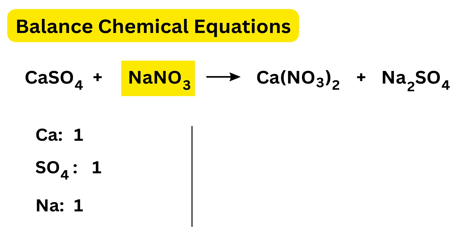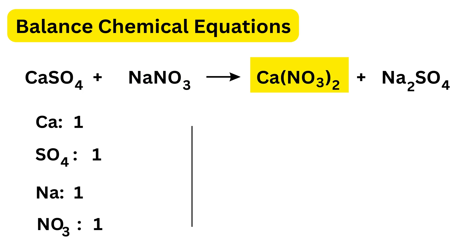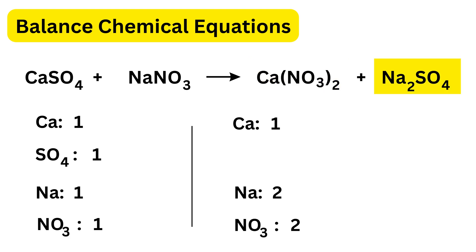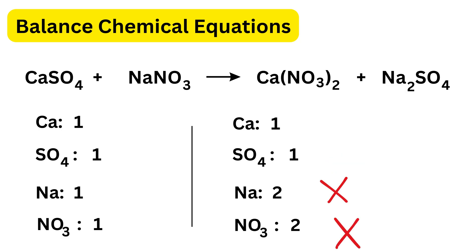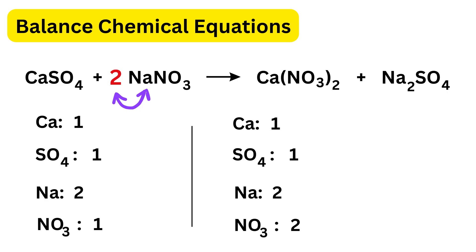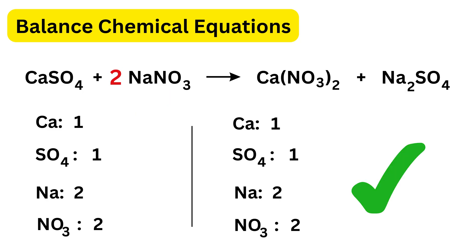On the right, calcium nitrate has one calcium and two nitrate groups; sodium sulfate has two sodiums and one sulfate. Calcium and sulfate are already balanced, but sodium and nitrate are not. We put 2 in front of sodium nitrate on the left, giving two sodiums and two nitrate groups on the left. This gives us the balanced equation without even breaking down the polyatomic ions into separate atoms.